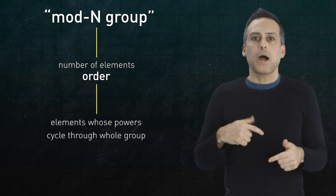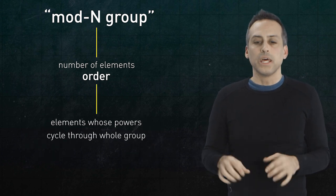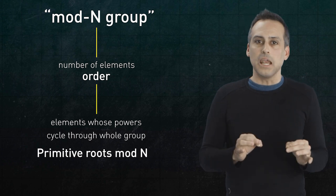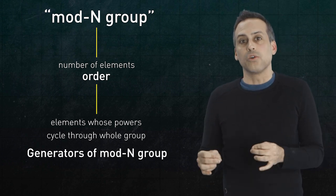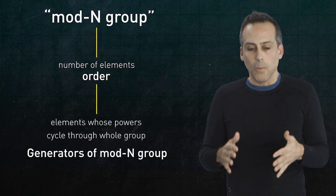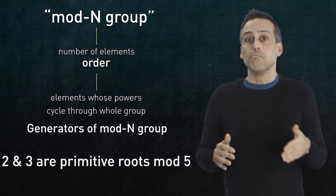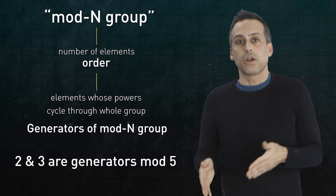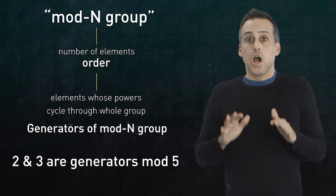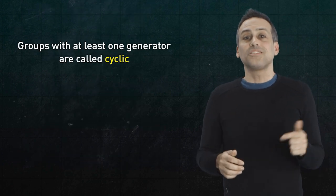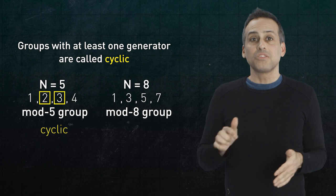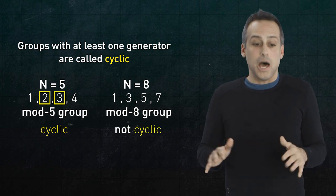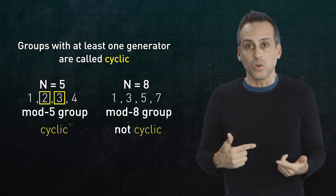Elements of the group whose powers cycle through the whole group are called primitive roots mod n, or alternately, generators of the mod n group. So 2 is a primitive root mod 5, a.k.a. a generator of the mod 5 group. Groups that have at least one generator are called cyclic. So the mod 5 group is cyclic, but the mod 8 group is not, because nothing in that group cycled.